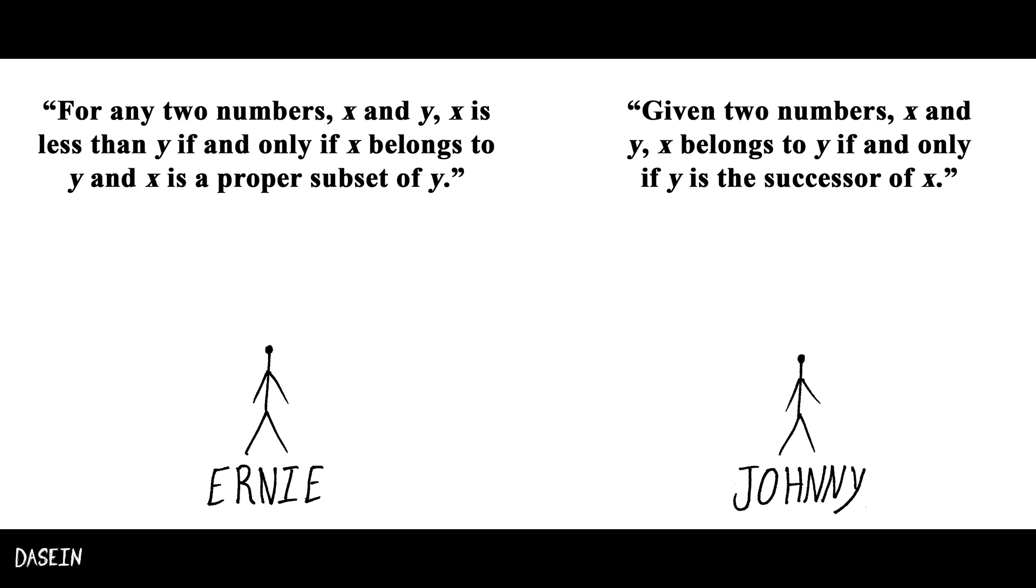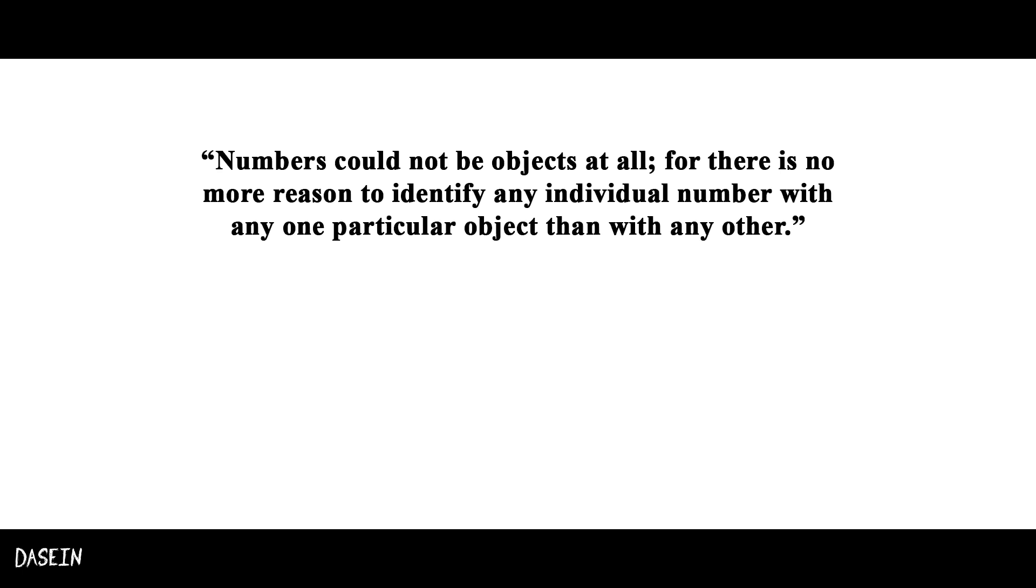This disagreement is due to the fact that for Ernie, the progression of numbers looks like this, while for Johnny, the progression of numbers looks like this.